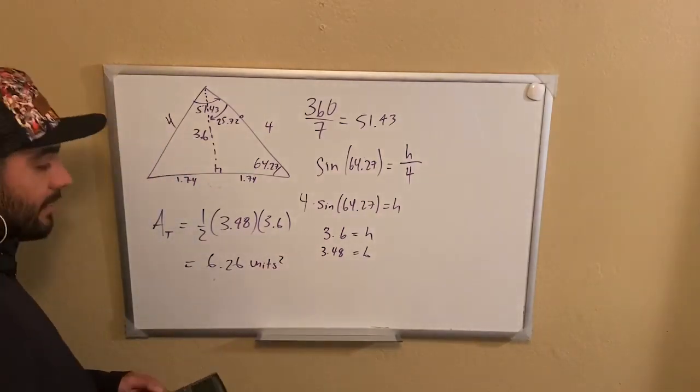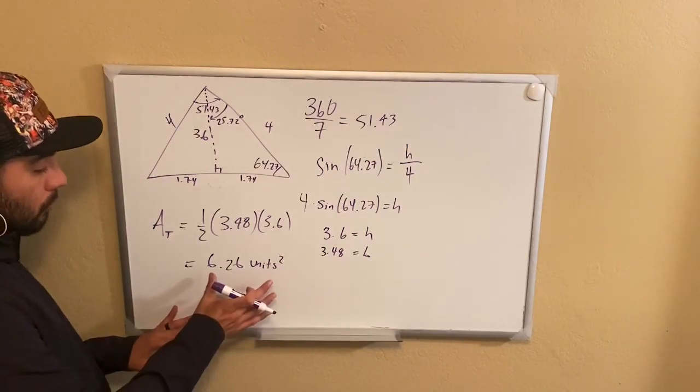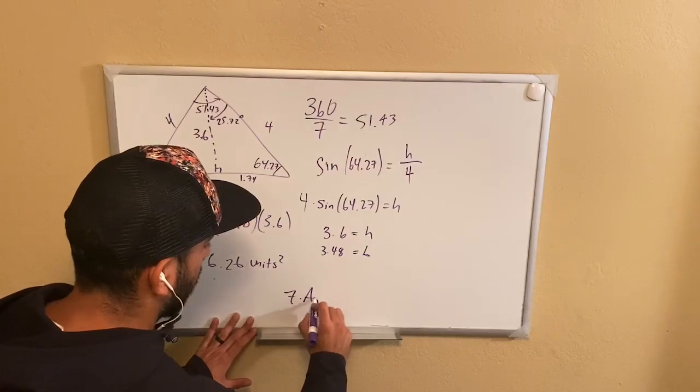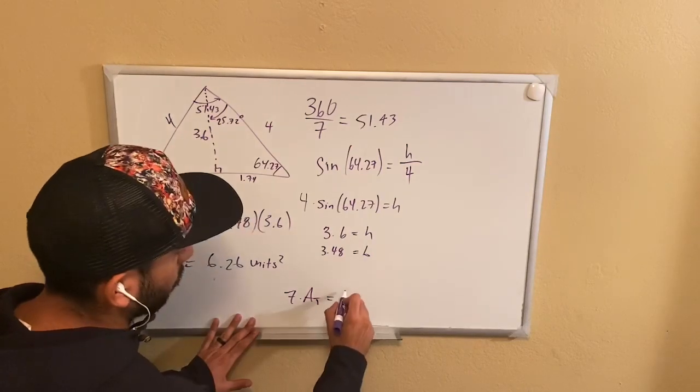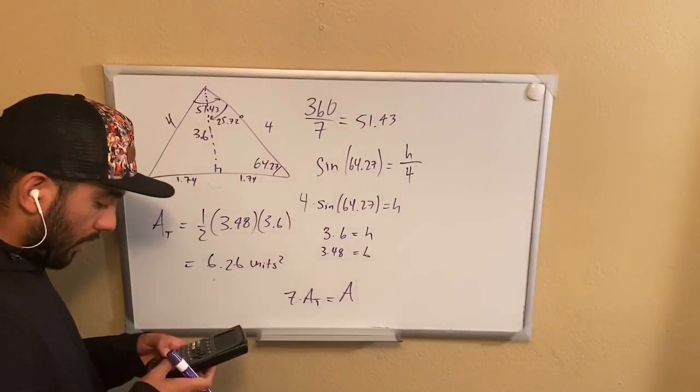Now, keep in mind, this is just the area for one of the triangles. But because this is a heptagon, we need to multiply this value by 7. So 7 times the area of the triangle is going to be equal to the total area. We'll call that just capital A.